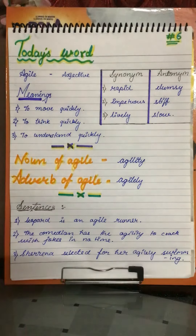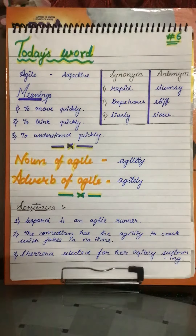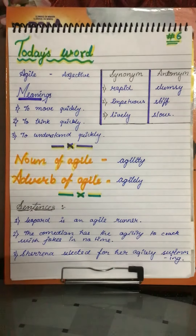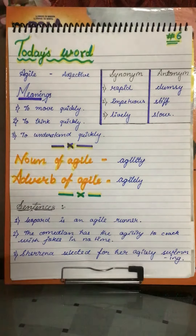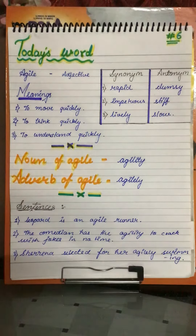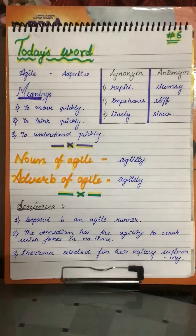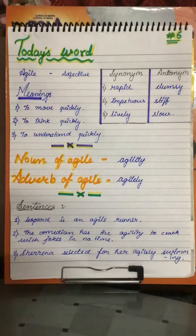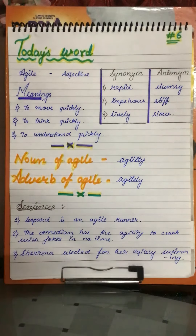Jaysay aap meri videos ko dekkar samajjate hai. The synonyms of this word are: rapid, impetuous, lively. Antonyms are: clumsy, stiff, slow.